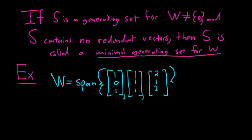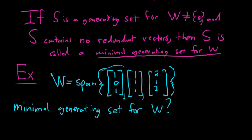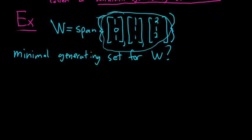So W is equal to the span. And let's find a minimal generating set for W. So what is a minimal generating set for W? So we already know that this set spans W. We just have to remove redundant vectors from the span, and then we have it. Solution. So we'll start by writing down our span.